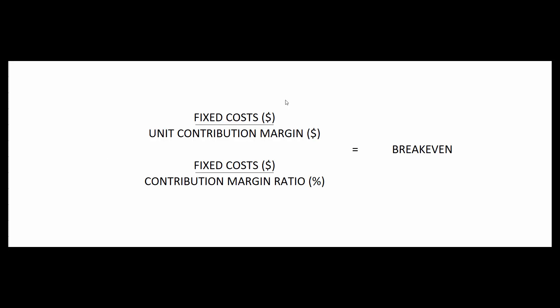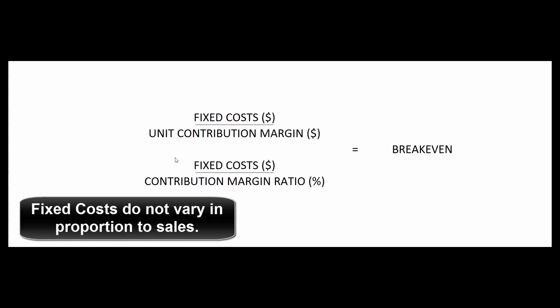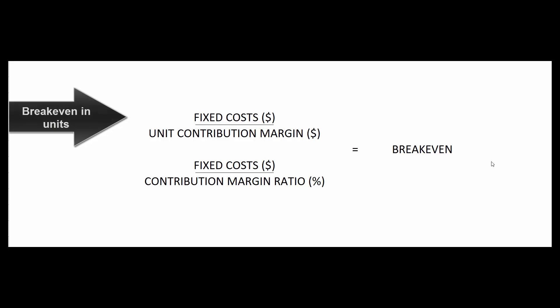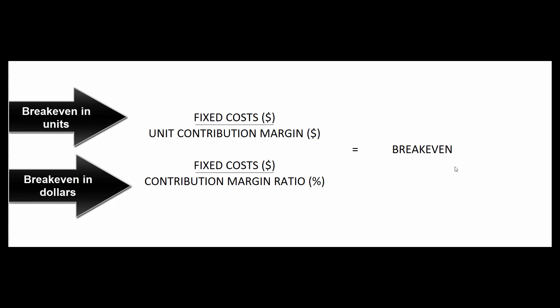Fixed costs are costs that don't change in proportion to sales — they might change, but not in proportion to sales. Unit contribution margin is how much we make on each sale expressed in dollars. Contribution margin ratio is how much we make on each sale expressed as a percentage. When we divide dollars by dollars we get break-even in units; when we divide dollars by a percentage we get break-even expressed in dollars.